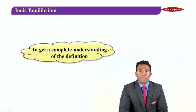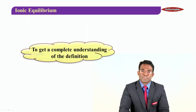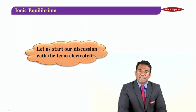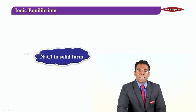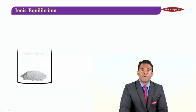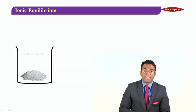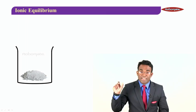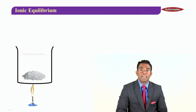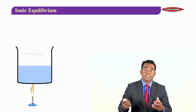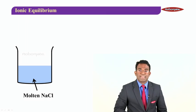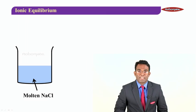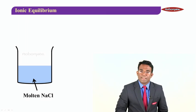To get a complete understanding of this definition, let us start our discussion with the term electrolyte first. I take an example: NaCl in solid form. We have a vessel with NaCl in solid form. We supply heat, and the moment we start heating it, NaCl starts melting and what we have now is molten NaCl, obtained by melting solid NaCl.